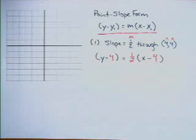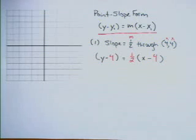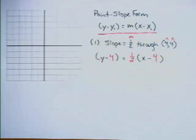So this is the equation of the line in point-slope form, but it's often far more useful to have it in slope-intercept form. So we're going to put this into slope-intercept form.